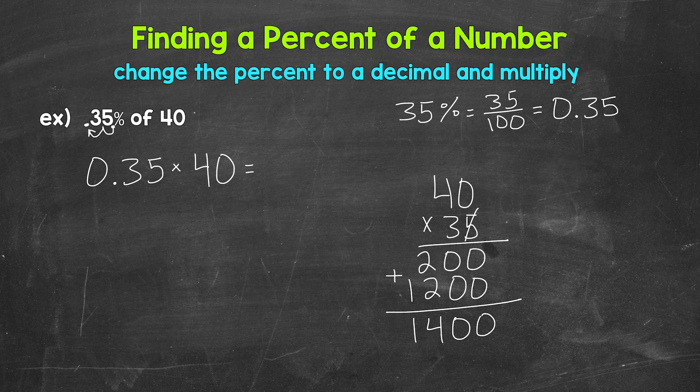Now we need to place the decimal. So we go back to the original problem and count how many digits are to the right of a decimal. We have 1 digit, 2 digits to the right of a decimal. That means our answer will have 2. So 1, 2 digits to the right of the decimal. The decimal goes in between the 4 and the 0.